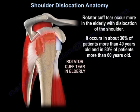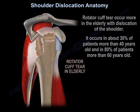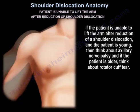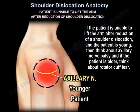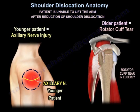Cuff tears occur more in the elderly with dislocation of the shoulder — about 30% in patients more than 40 years and 80% in patients more than 60 years. If the patient is unable to lift the arm after reduction of shoulder dislocation and the patient is young, think about axillary nerve palsy. If the patient is old, think about rotator cuff tear.